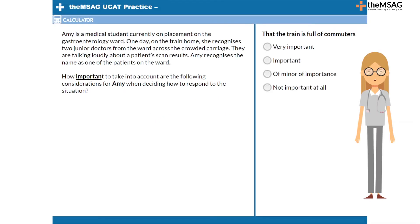In this scenario, how important is the fact that the train is full of commuters? The answer to this question is A. The fact that there are other commuters on the train is very important for Amy to consider when deciding how to act.